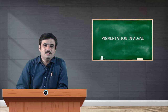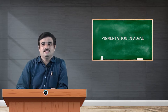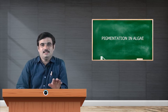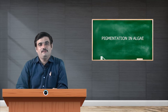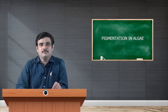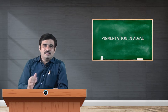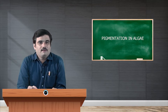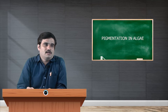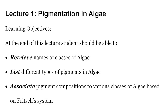We can see different colors in algae, and that color is because of the pigments present in them. Today we will deal with some of the commonly used pigments and pigmentation types used in classification. The objectives of today's lecture are to retrieve the names of the 11 classes of algae and to list different types of pigments in algae.